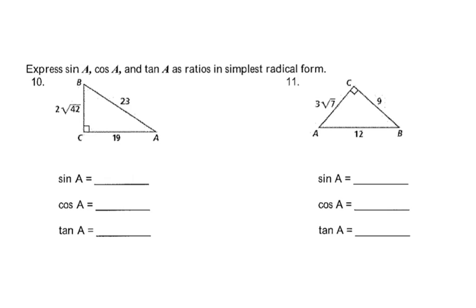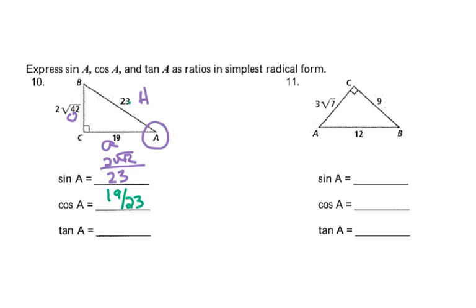Welcome back, you guys. Let's see how well you did. Here's our angle A — opposite, adjacent, hypotenuse. Sine of A is opposite over hypotenuse: 2 radical 42 over 23. That is in simplest form, so we leave it alone. Cosine is adjacent over hypotenuse: 19 over 23, also in simplest form. And tangent is opposite over adjacent: 2 radical 42 over 19, in simplest form.